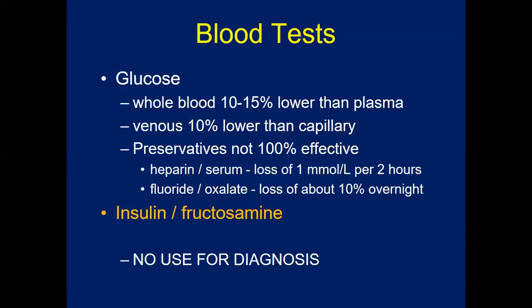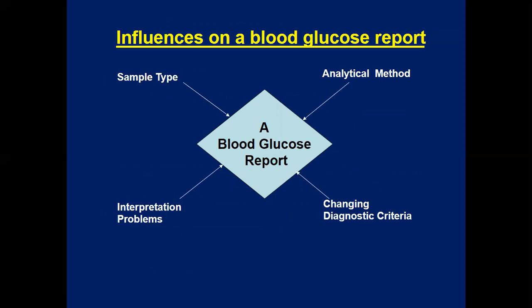Insulin levels may be necessary at some stage of diabetes mellitus management. Several factors influence a blood glucose report: the sample type, how it was taken, how much time has elapsed, and which analytical method was used. Interpretation problems may arise from different fasting, post-meal, and random glucose levels, and diagnostic criteria change every few years based on new research.